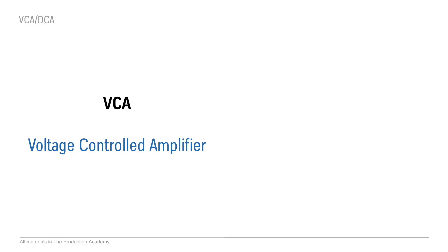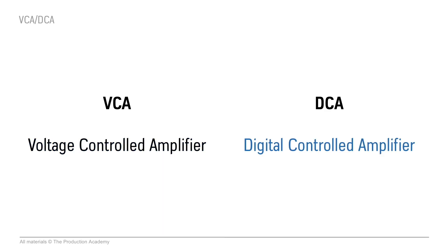Most professional consoles have a feature called VCAs, which stands for voltage-controlled amplifier — referring to the way these work in analog consoles. Digital consoles have DCAs, or digital controlled amplifiers, even though most digital consoles will just say VCA instead, since it's such an ingrained part of our audio vocabulary. But they operate the same way, so we'll just say VCA in this training.